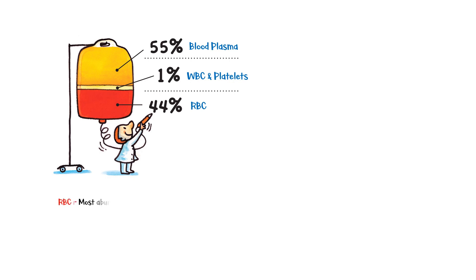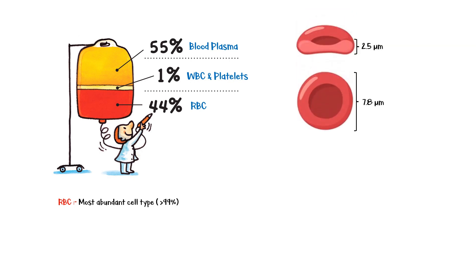Red blood cell is the most abundant type of cell in blood. Normal red blood cells are biconcave discs, having a mean diameter of 7.8 micrometers and a thickness of around 2.5 micrometers. The average volume of a single red blood cell is about 90 to 95 cubic micrometers.